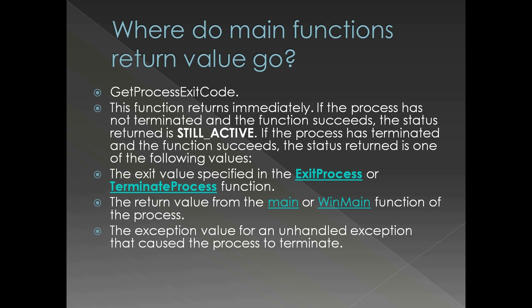If the process has terminated and the function succeeds, the status returned is one of the following values — this is from MSDN. It is pretty much the value you are passing to ExitProcess or TerminateProcess, or a return value from main or WinMain. The CRT library which calls main or WinMain is ultimately calling ExitProcess in the end, so it is the value passed to ExitProcess that comes in the exit code.